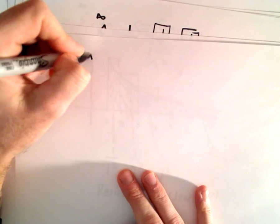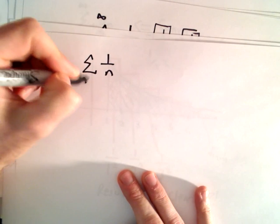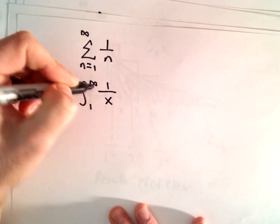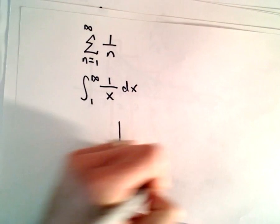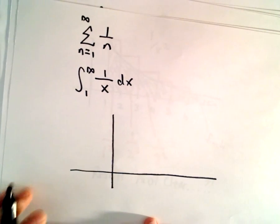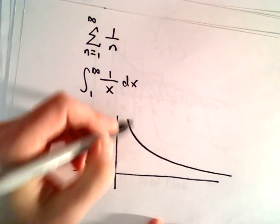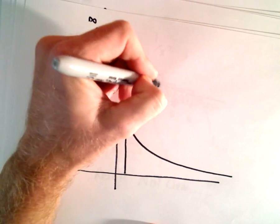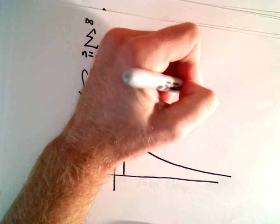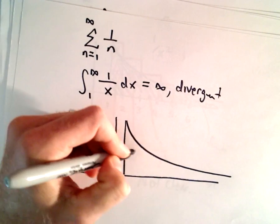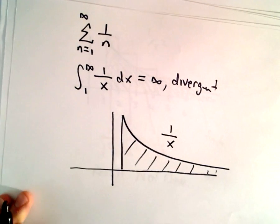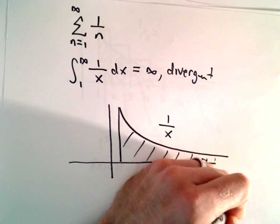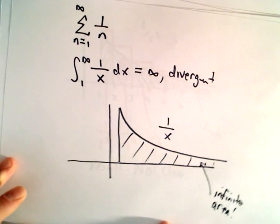Now if you want to show a series is divergent using the integral test, let's look at the improper integral from 1 to infinity of 1 over x dx. The function 1 over x looks similar to 1 over x squared but doesn't get small quite as fast. We can show that the integral from 1 to infinity of 1 over x dx equals infinity — it is divergent. So all the area underneath the curve 1 over x, if you add it up, is infinite.